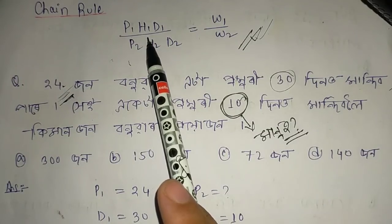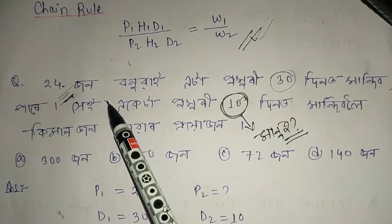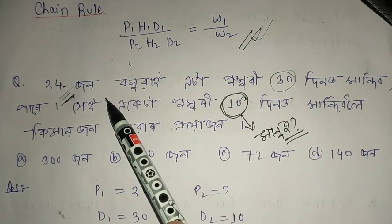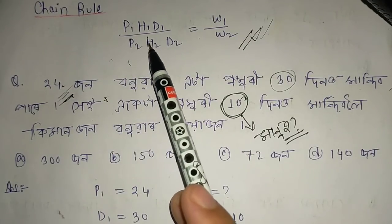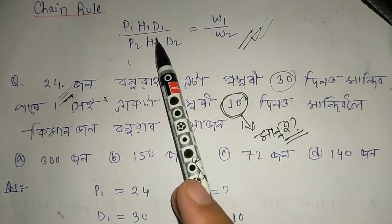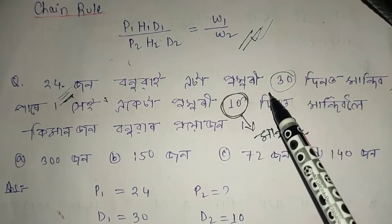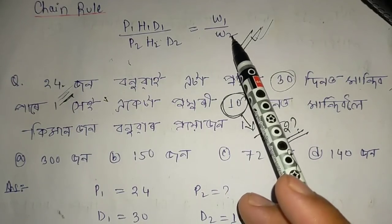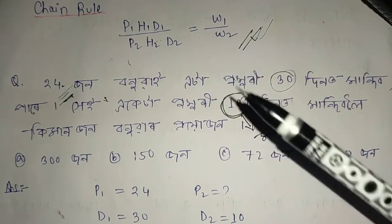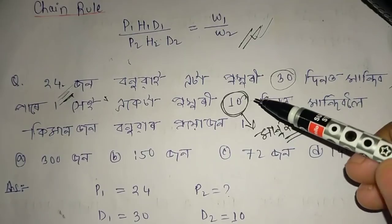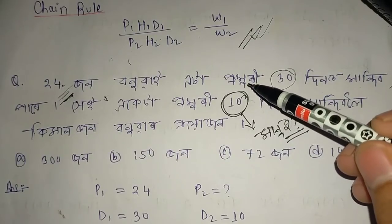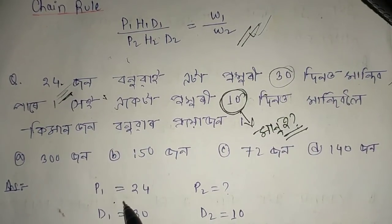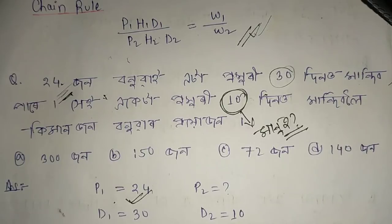H1 is how many hours? If you don't have a value, I will give you 1. D1 is how many days? It is 3 days. W1 and W2: if you don't have a value, I will give you 1. So what is P1? P1 is 24.